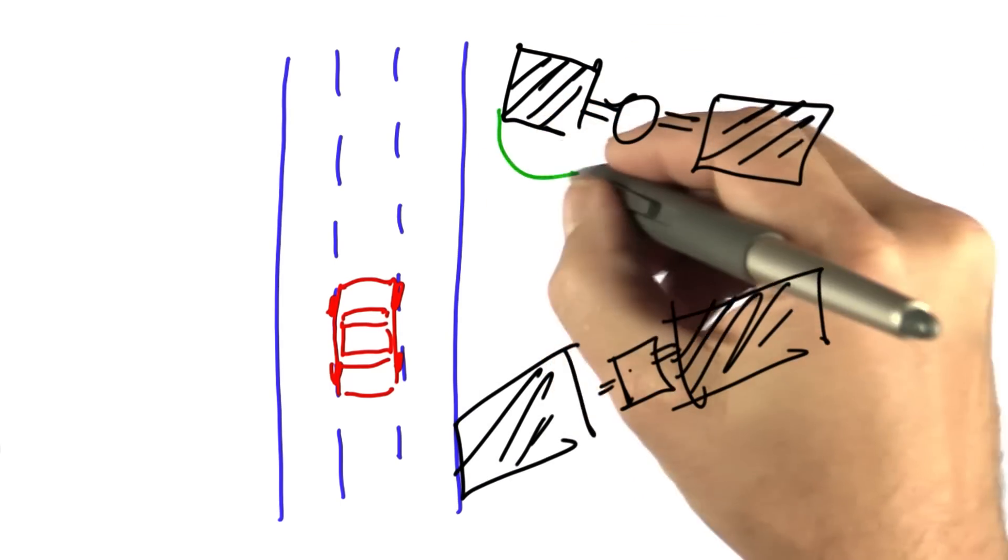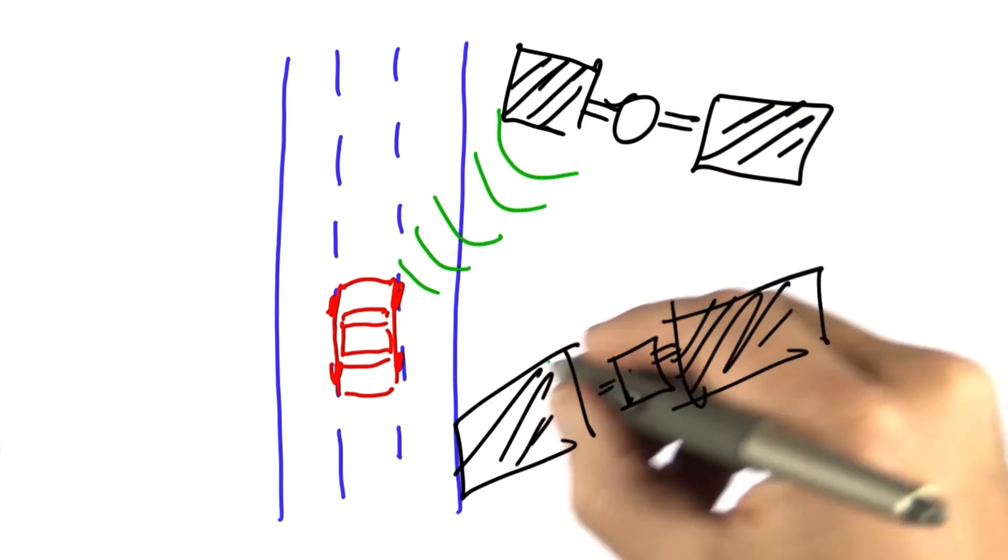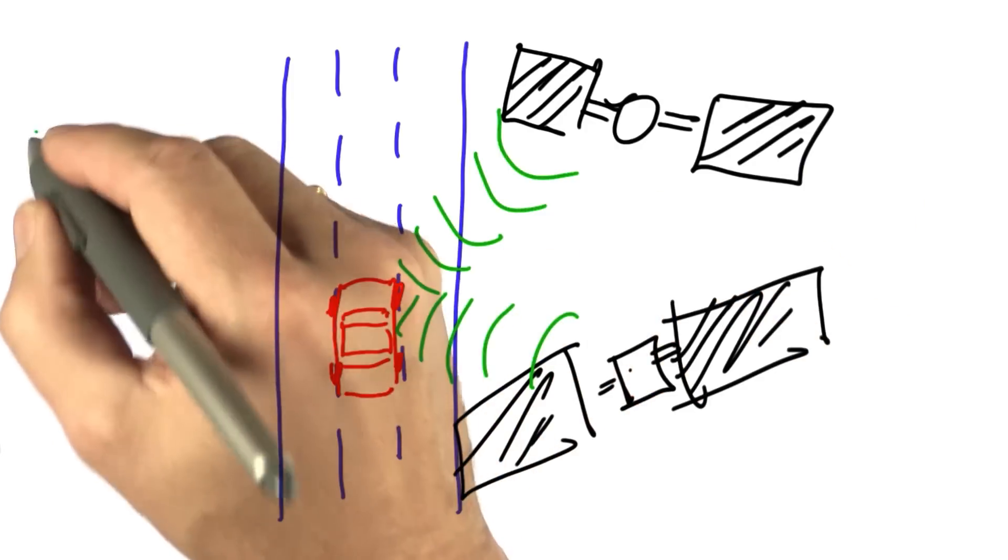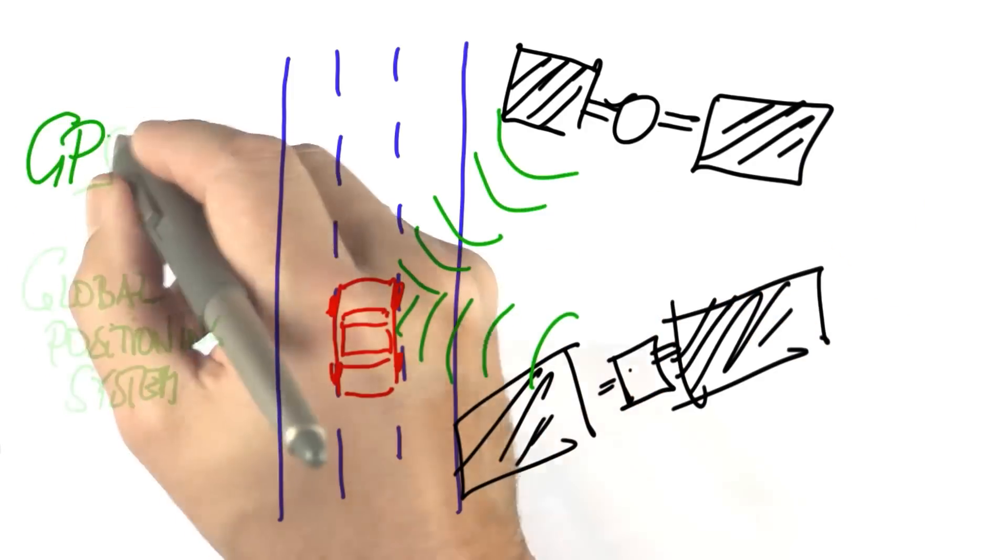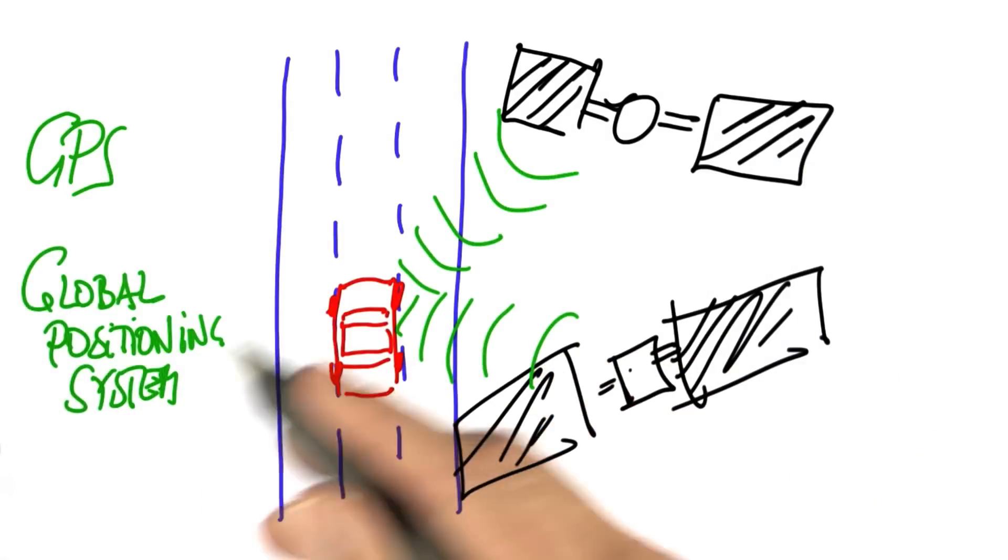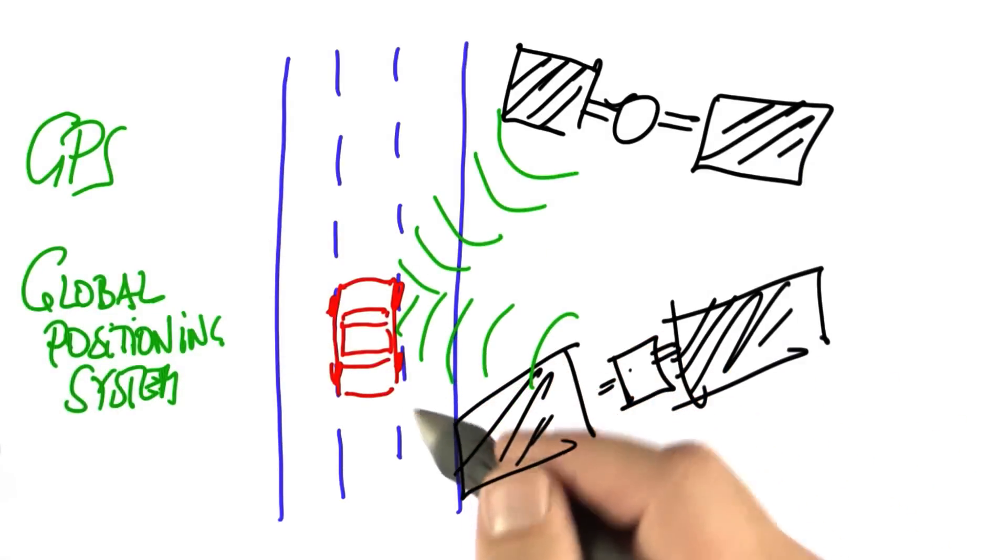Now, the traditional way to solve this problem uses satellites, and these satellites emit signals that the car can perceive. That's known as GPS, short for Global Positioning System, and it's what you have in your dashboard if you have a car with GPS that shows you the maps and shows you where you are.